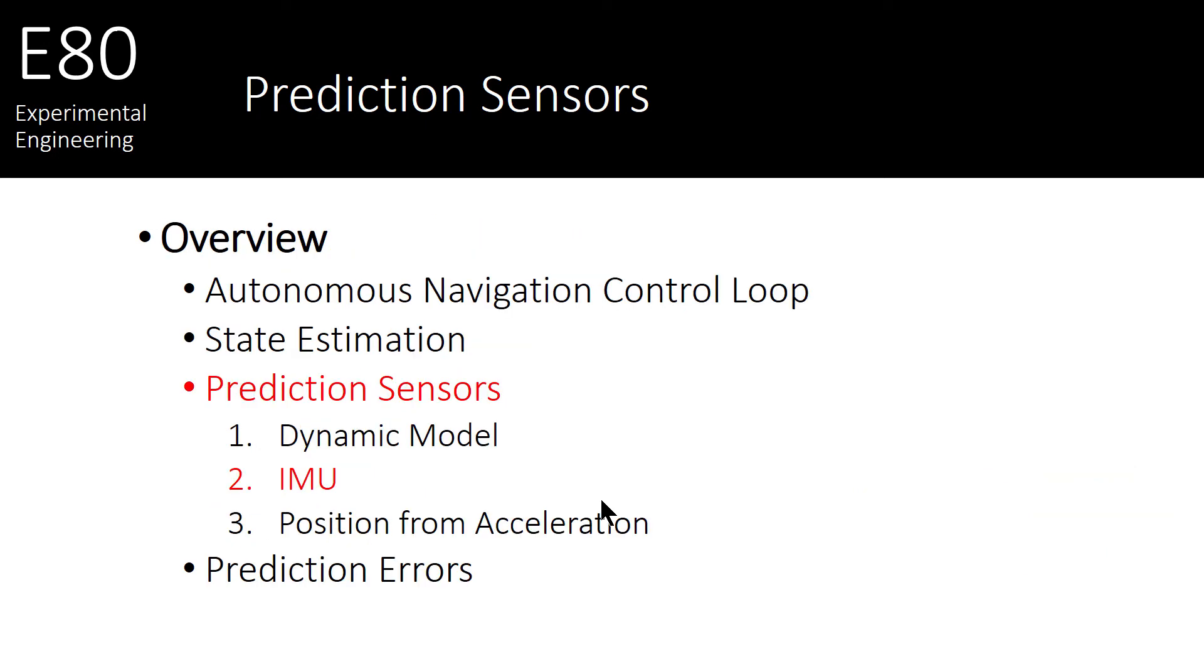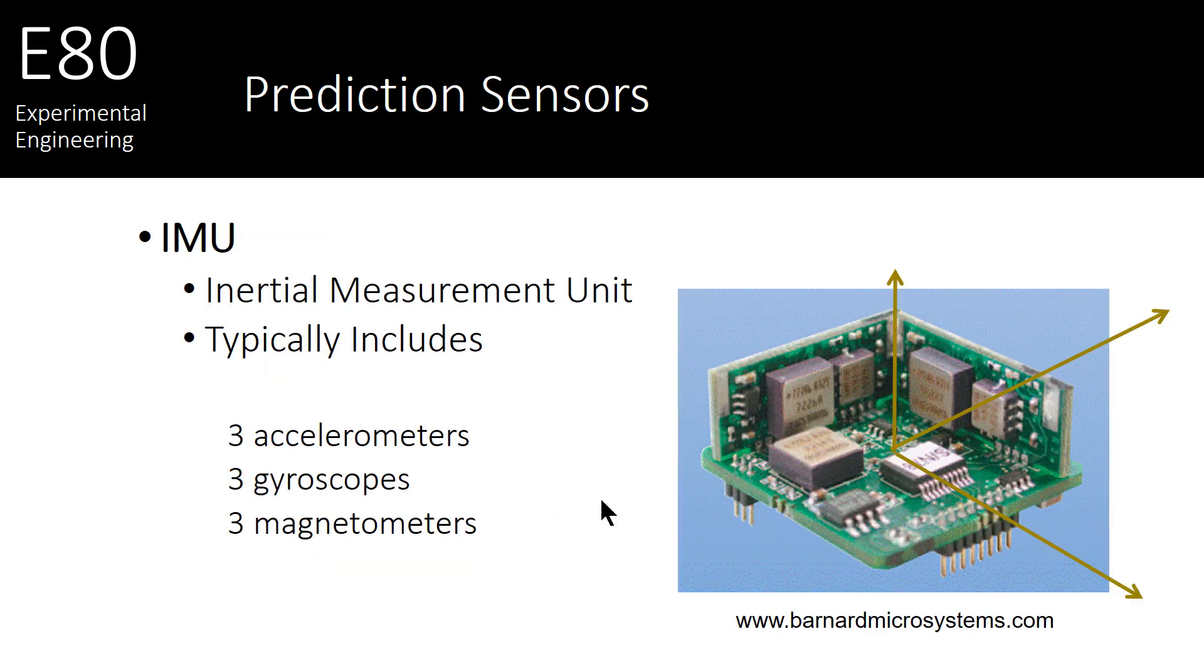Let's look at a second method. Instead of just using the math, we're going to actually take some measurements with an IMU, an inertial measurement unit. These units typically have three types of sensors on board. And for each sensor, there are three of them, one facing each direction.